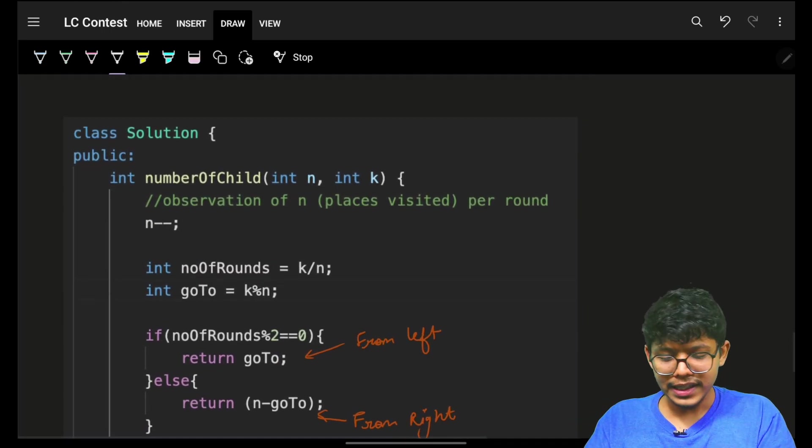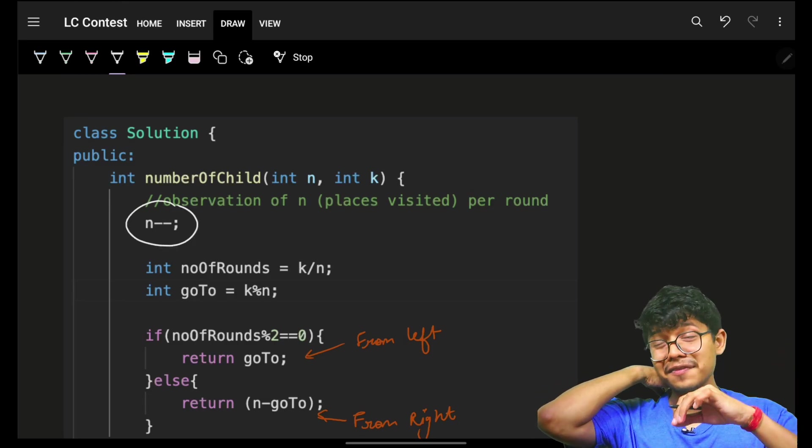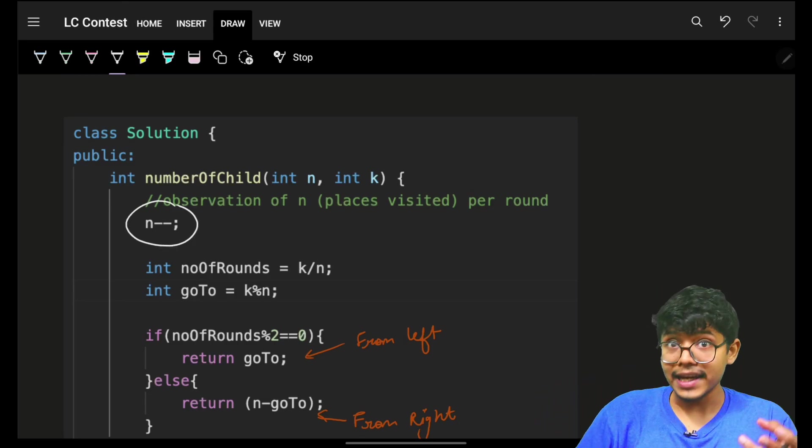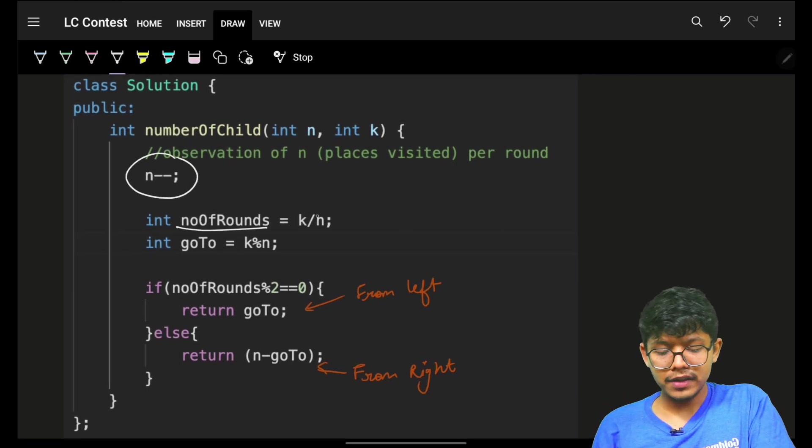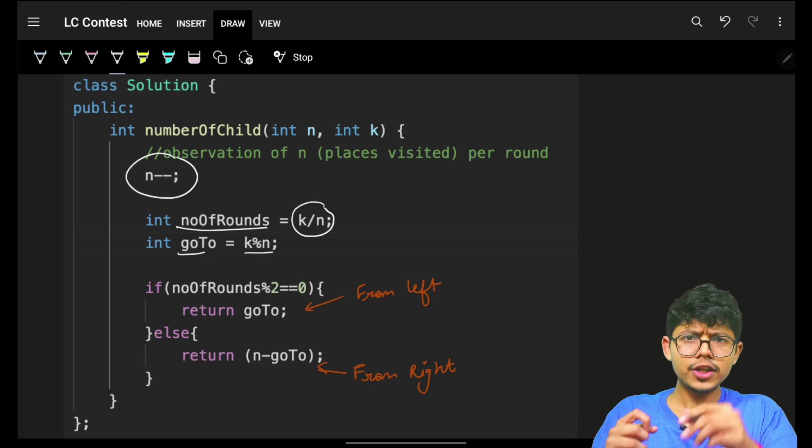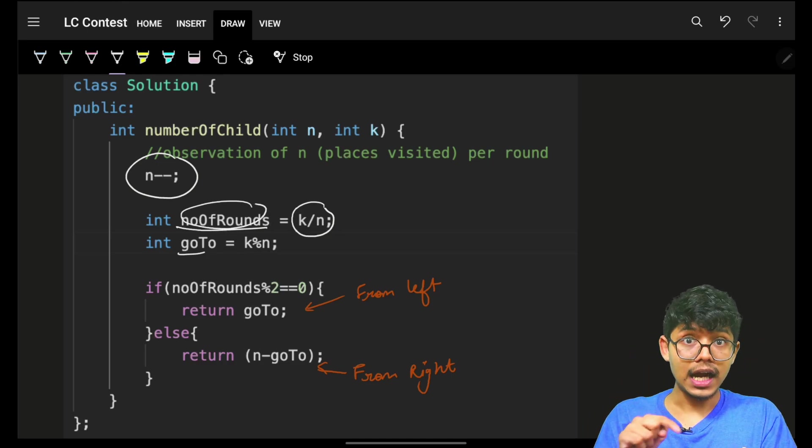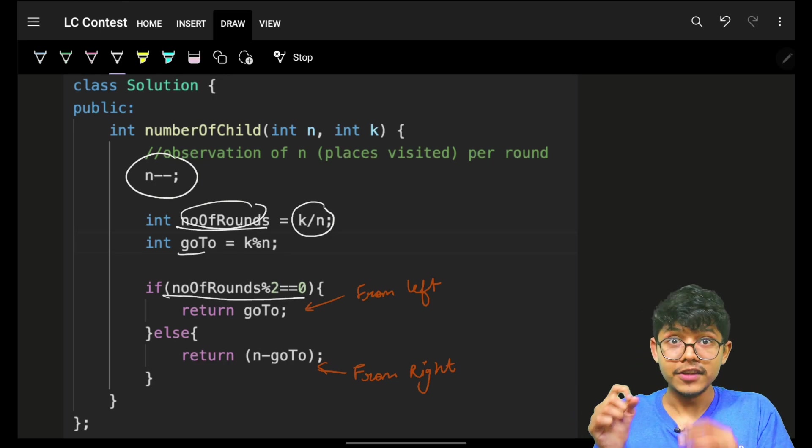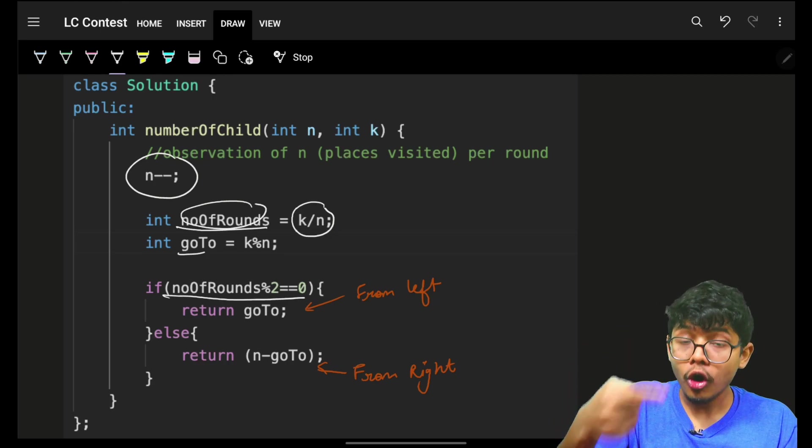So, you realize one thing, that firstly, you should reduce your n, just to know that for a specific round, how many seconds will be iterated. Then, number of rounds done so far will be k by n. Number of steps remaining will be k mod n. Or, you can say, go to index. Now, if the rounds, number of rounds done, are even, which means current round which you are trying is odd. For the odd round, you have to go from the left.